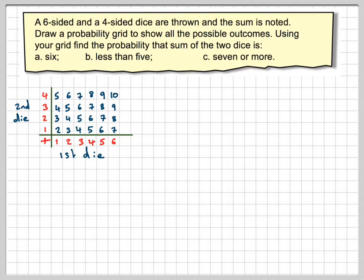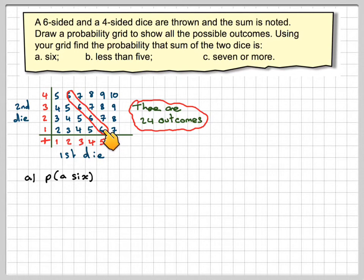Right, part A: find the probability that the score is six. We must realize there are 24 different outcomes in this experiment. The probability of getting a six - that's all these here. The purpose of drawing a diagram is to annotate it. So there are one, two, three, four ways of getting a six. That's four out of 24, which makes one-sixth.